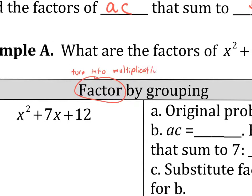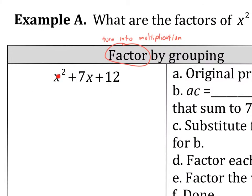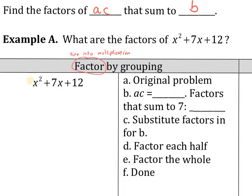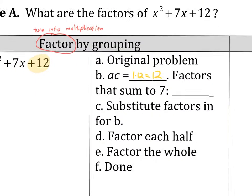So first off, we are given this quadratic x squared plus 7x plus 12, and we're asked to factor. If you forgot what factor means, factor means to turn into a multiplication problem. Because right now it's an addition problem. I'm adding a bunch of terms together. The last step, I want it to look like blank times blank.